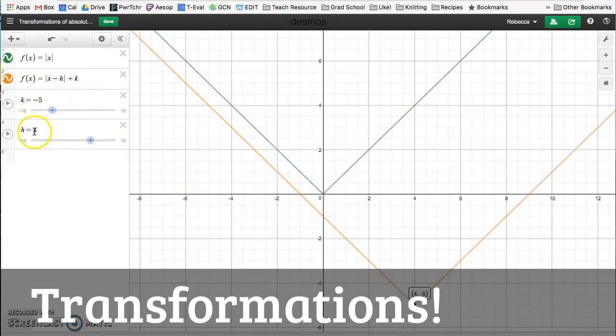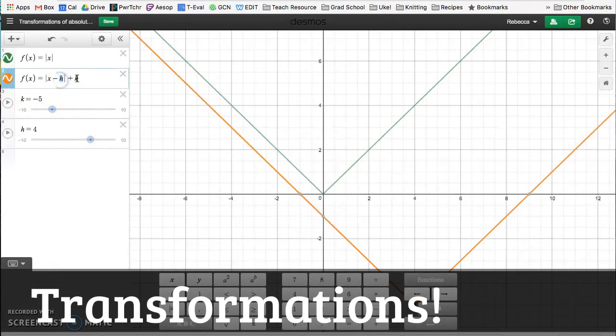Whatever these two values are, h will be the x value of the vertex, and k will be the y value of the vertex. So you can actually tell what the vertex is based on these two numbers.